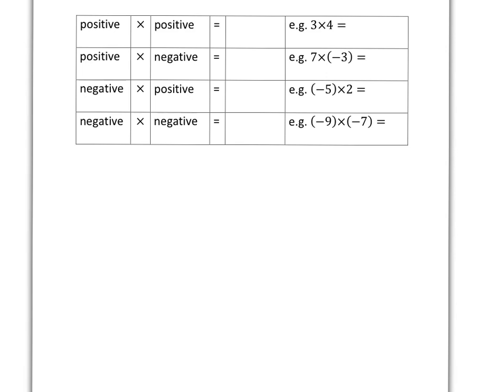We're going to start with something that's very simple and very familiar, which is a positive times a positive. Something like 3×4, that's the kind of thing you've been doing since you were in grade 2 or 3. 3×4 means we've got 3 lots of 4. In other words, 1, 2, 3 lots of 4, and that's very easy. The answer there is 12.